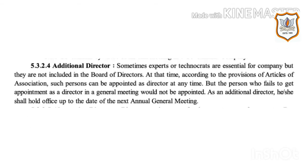Additional Director: Sometimes experts or technocrats are essential for a company but are not included in the board of directors. According to the provisions of articles of association, such persons can be appointed as director at any time. However, a person who fails to get appointment as a director in a general meeting would not be appointed as an additional director. Such a person shall hold office up to the date of the next annual general meeting.